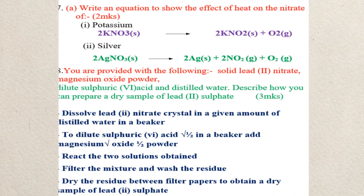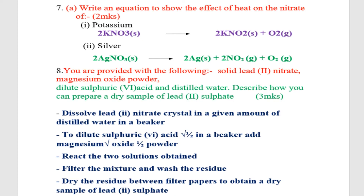Question seven: Write equations to show the effect of heat on nitrates. For potassium nitrate: when heated, it produces potassium nitrite and oxygen gas. For silver nitrate: when heated, it produces silver solid, nitrogen dioxide gas, and oxygen gas.